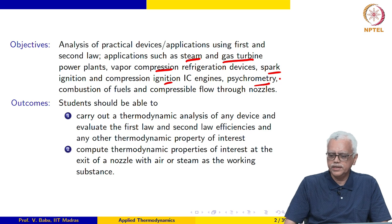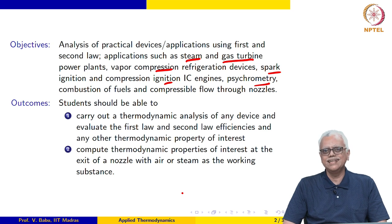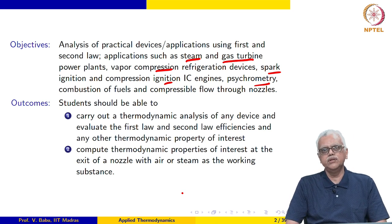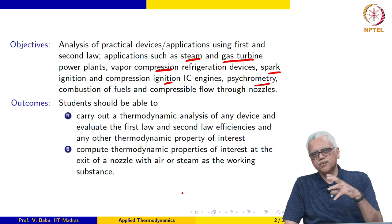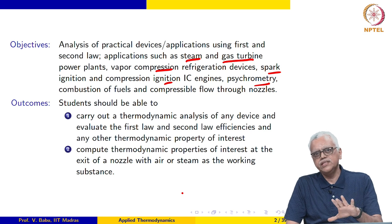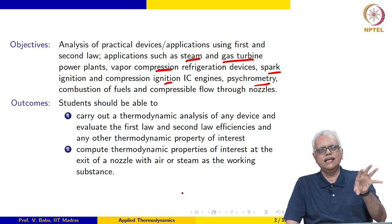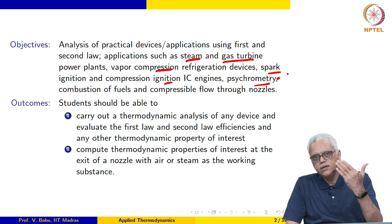We then move on to psychrometry, which is a very important application in mechanical engineering. Basically, if you look at many heating, ventilation, and air conditioning (HVAC) applications today, it is used in automobiles to maintain the cabin at a comfortable temperature and in large buildings to maintain different parts at different conditions of temperature as well as humidity. HVAC is the part of mechanical engineering that deals with that, and HVAC itself is founded on psychrometry, which deals with moist air.